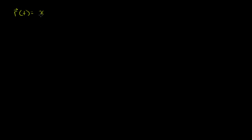So let's say I have the vector-valued function r of t. This is no different from what I did in the last video: x of t times unit vector i, plus y of t times the unit vector j. If we're doing it in three dimensions, we'd add a z of t times k. But let's keep things relatively simple. Let's say that this describes a curve, between t equals a and t equals b.